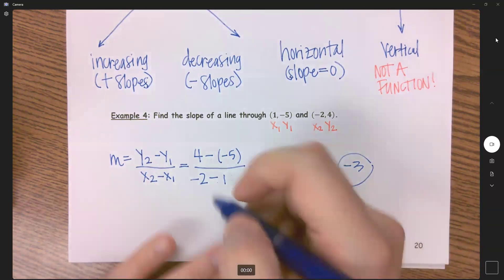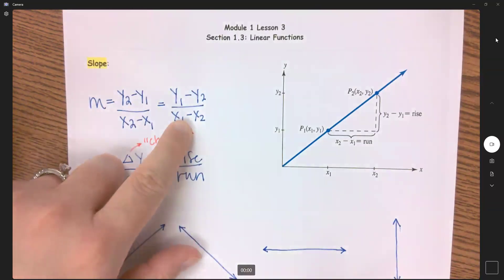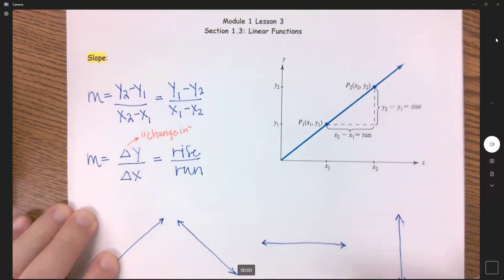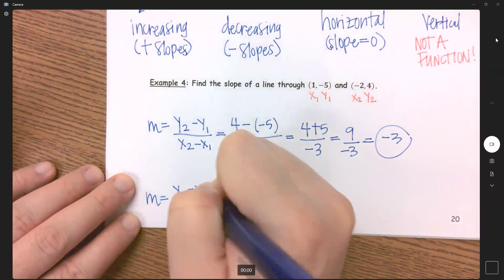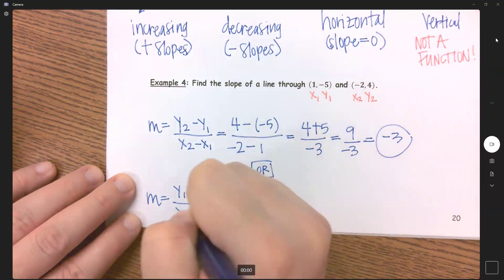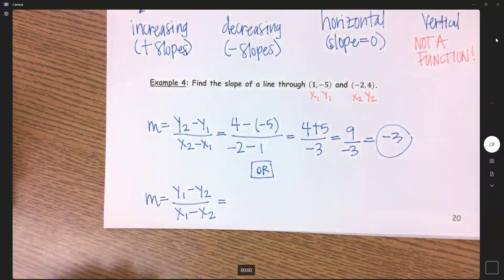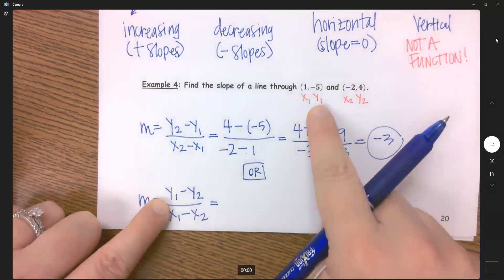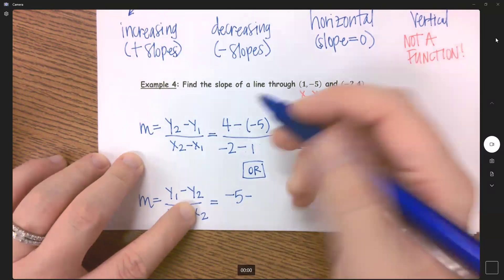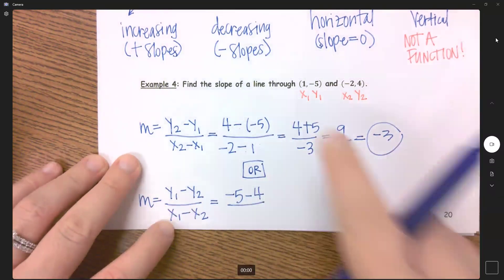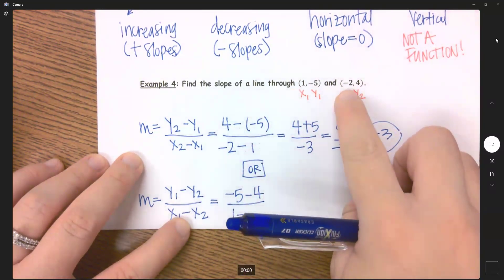Now, you can either just watch or you can write this down. Your notes are completely up to you. But I want to show you that this works this order too. So I can also have y1 minus y2 over x1 minus x2. Still y over x but I've switched the order here. So y1 is now negative 5 minus y2 which is 4. My x1 is 1 minus x2 which is negative 2.